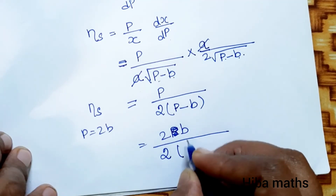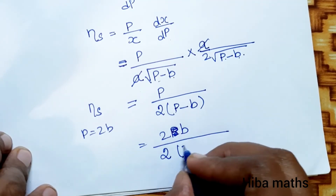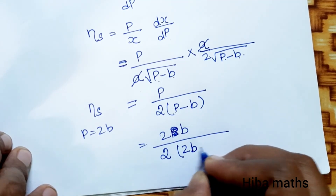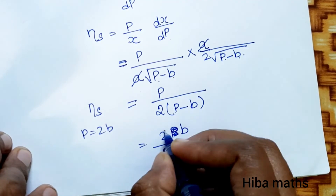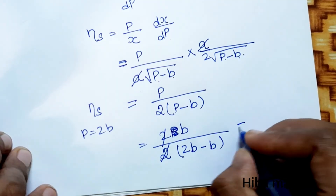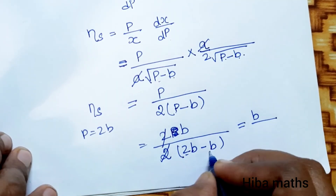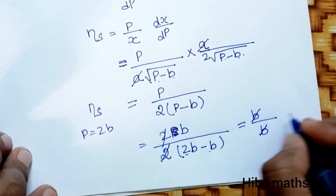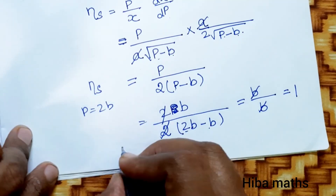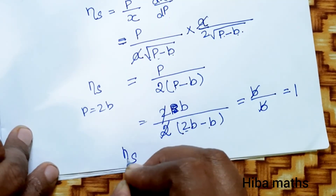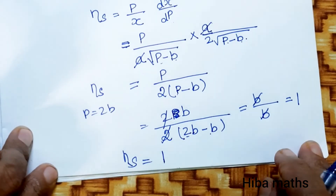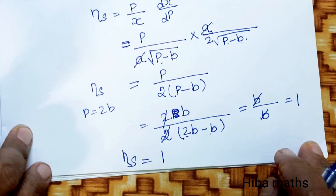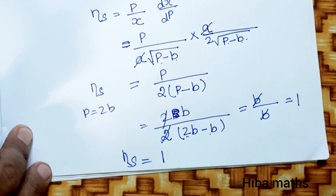Now substituting p equal to 2b: eta_s equals 2b divided by 2 times (2b minus b), which simplifies to b divided by 2b minus b, giving the final result.